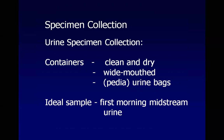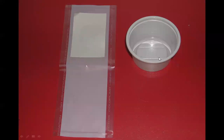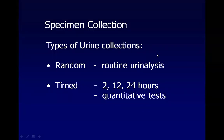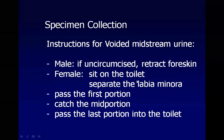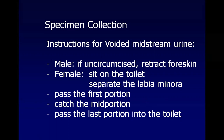For urine collection, containers must be clean, dry, and wide-mouthed. Pedia or wee bags are used for infants. The ideal sample is always first morning midstream urine. Types of urine collection include random (for routine urinalysis) and timed collections such as 2-hour, 12-hour, and 24-hour collections.